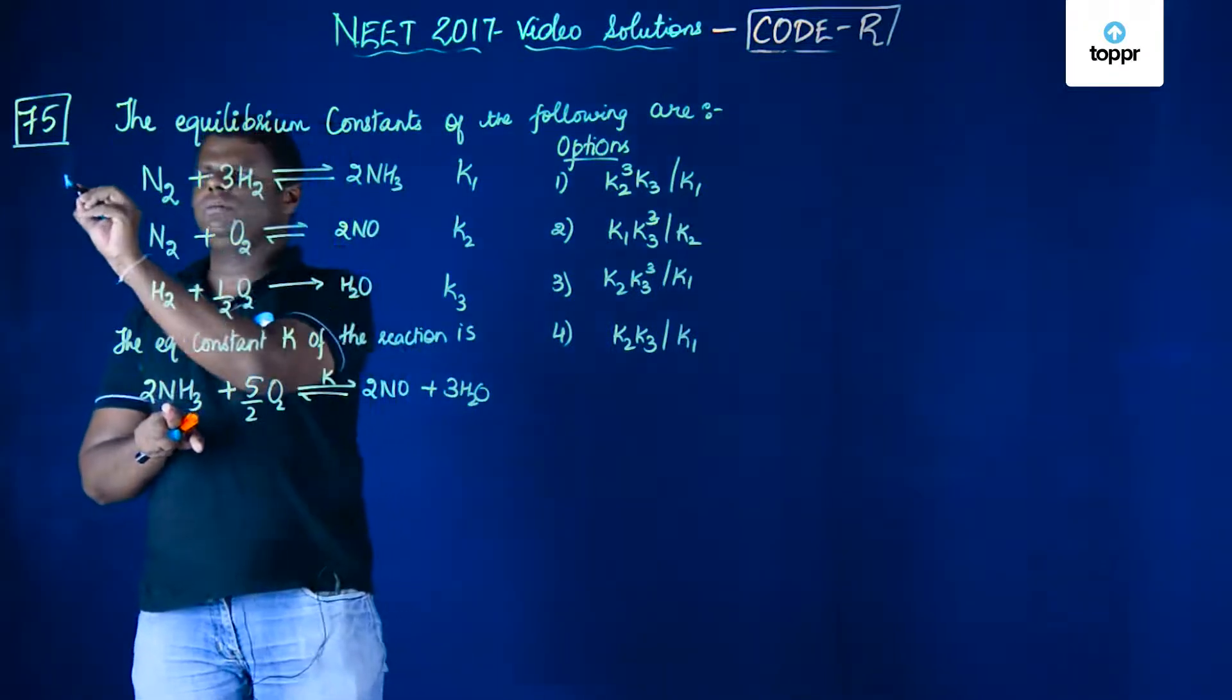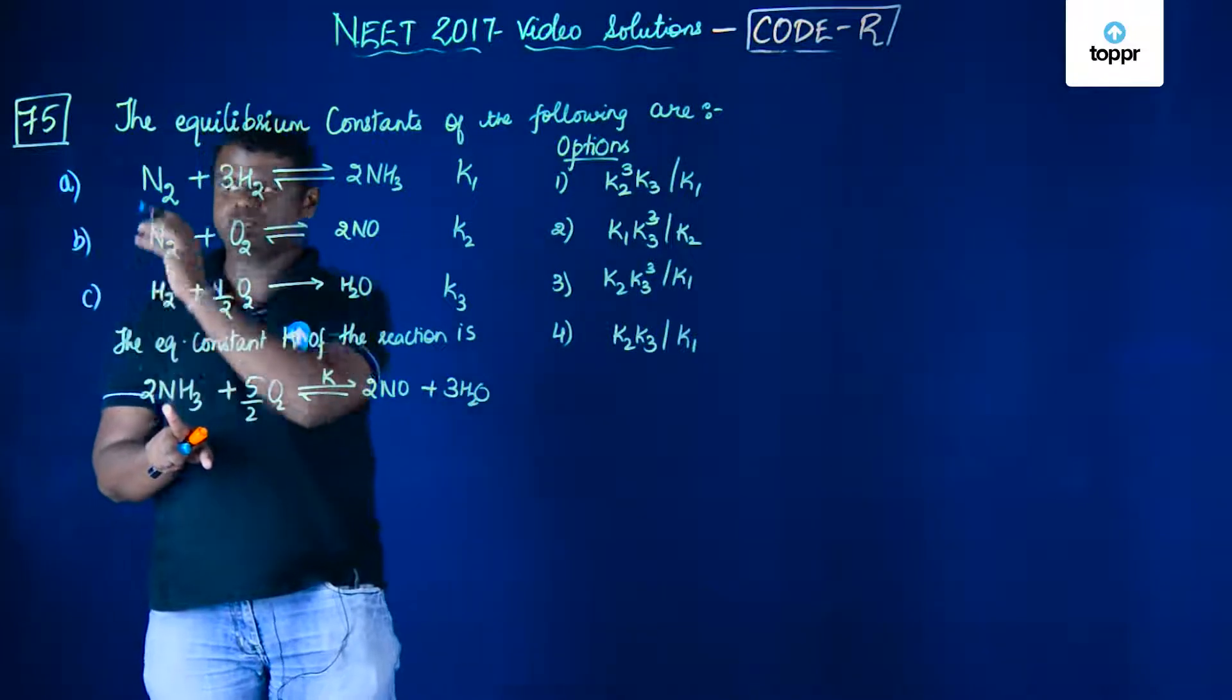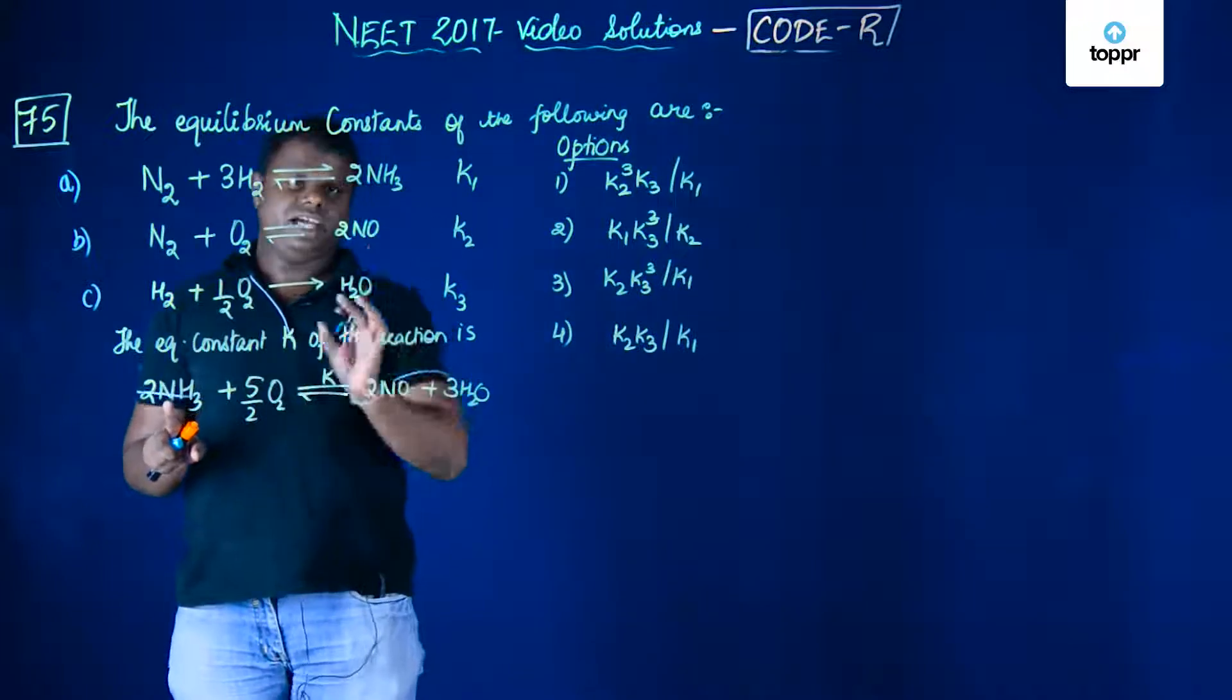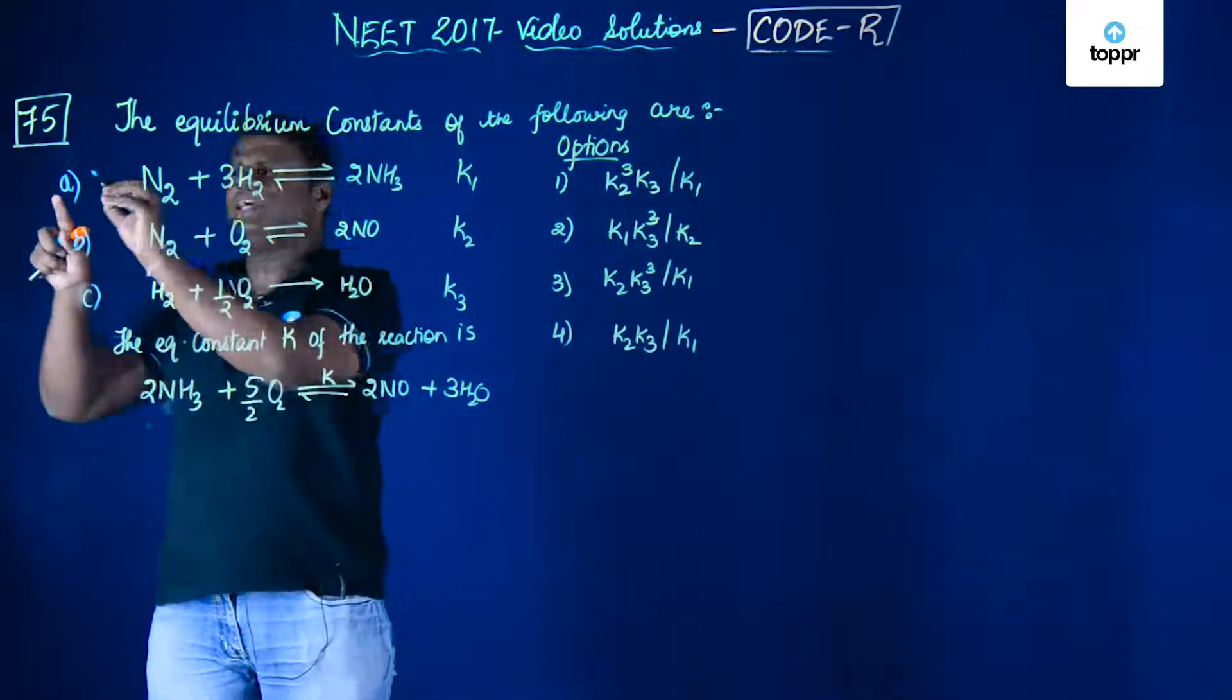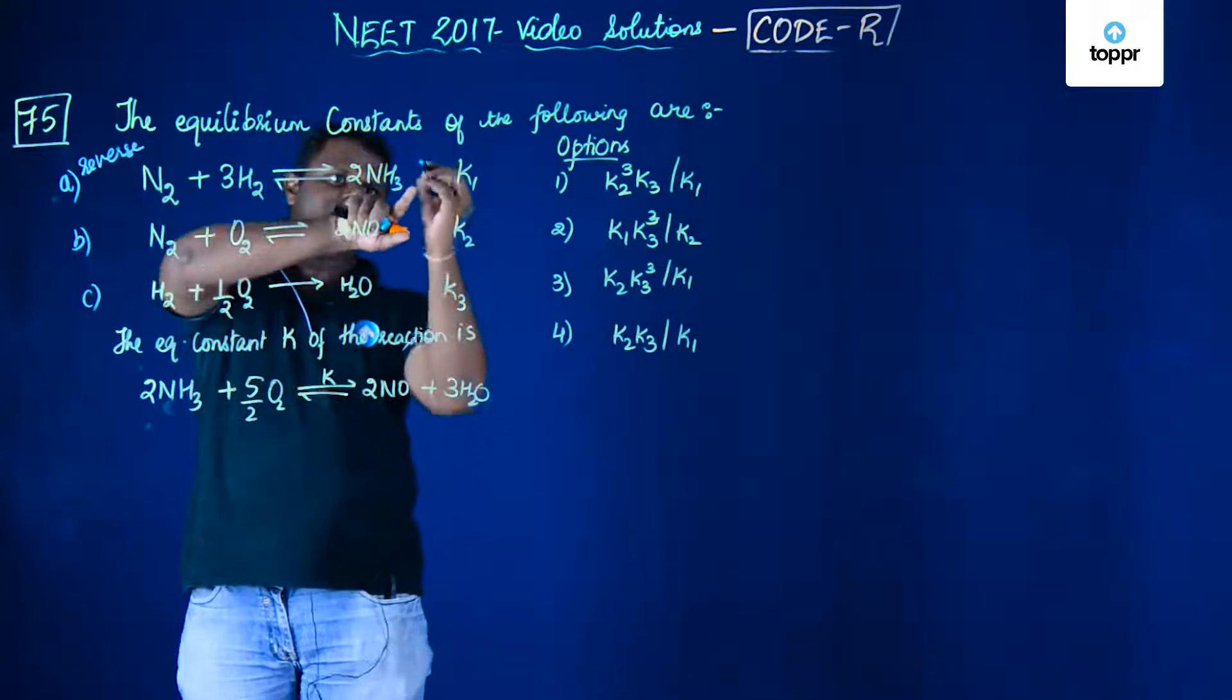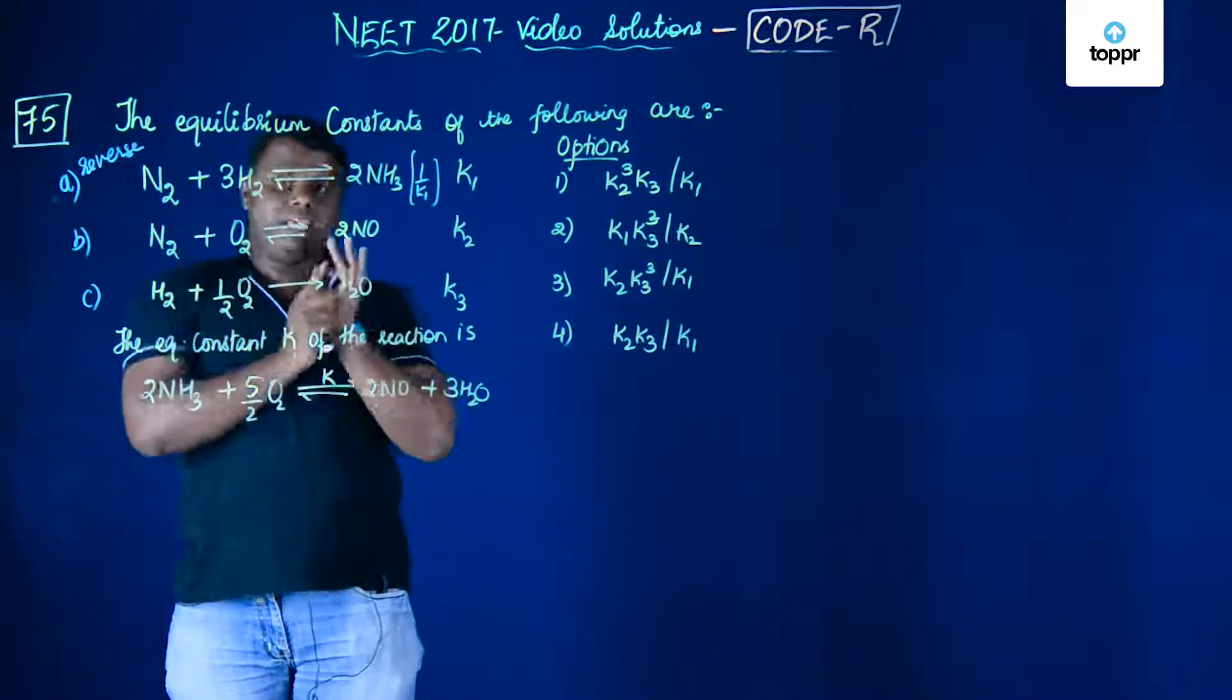Let's say this is equation A, this is equation B, and this is equation C. I'm taking ABC so you don't get confused. NH3 is coming on the left-hand side, that means A should be reversed. We are going to reverse A, that means the equilibrium constant would be 1 by k1, the reciprocal.